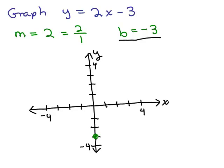If I write the slope as 2 over 1, both positive, I know it's going to slant up to the right. Remember, it's rise over run. The run, the denominator, is 1, so I go 1 to the right, then up 2, and there's another point on the line. I can keep doing that — over 1 and up 2 again to get more points. I like to plot a bunch of points because it's easier to connect the dots.